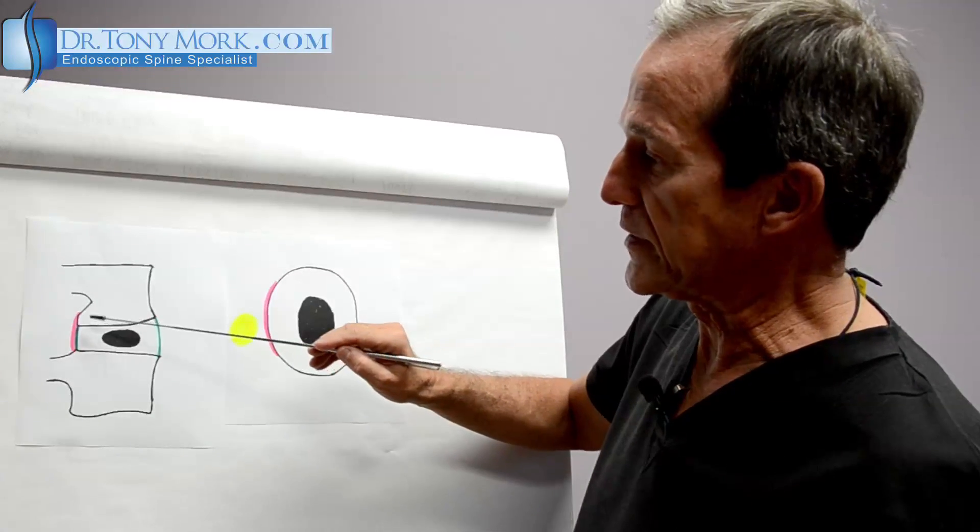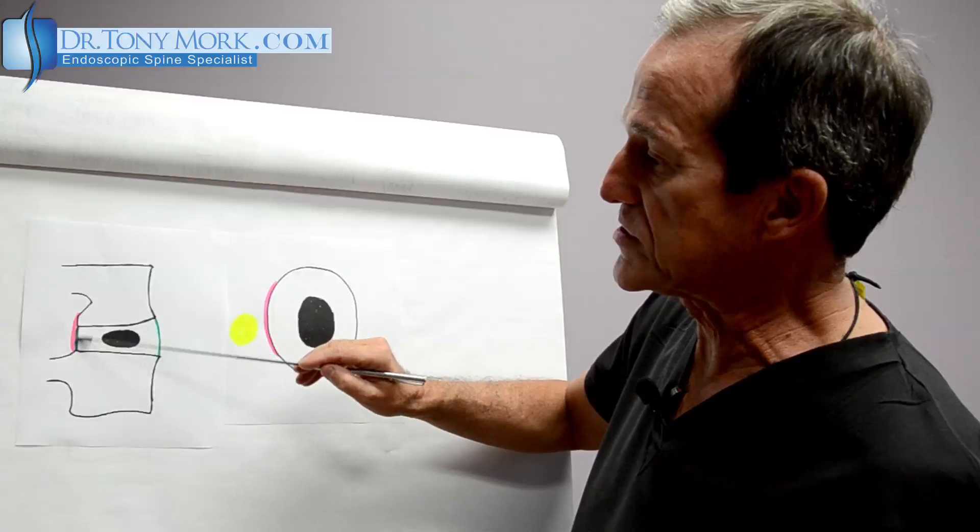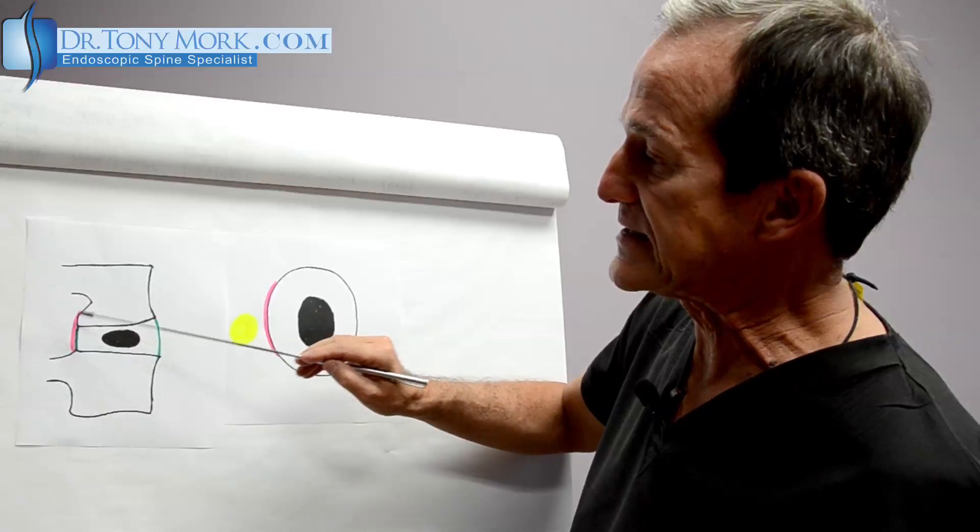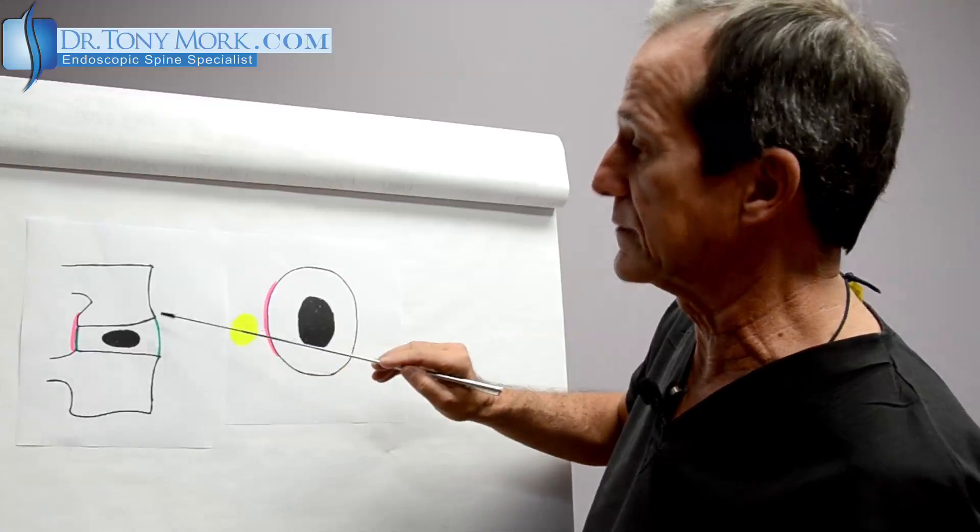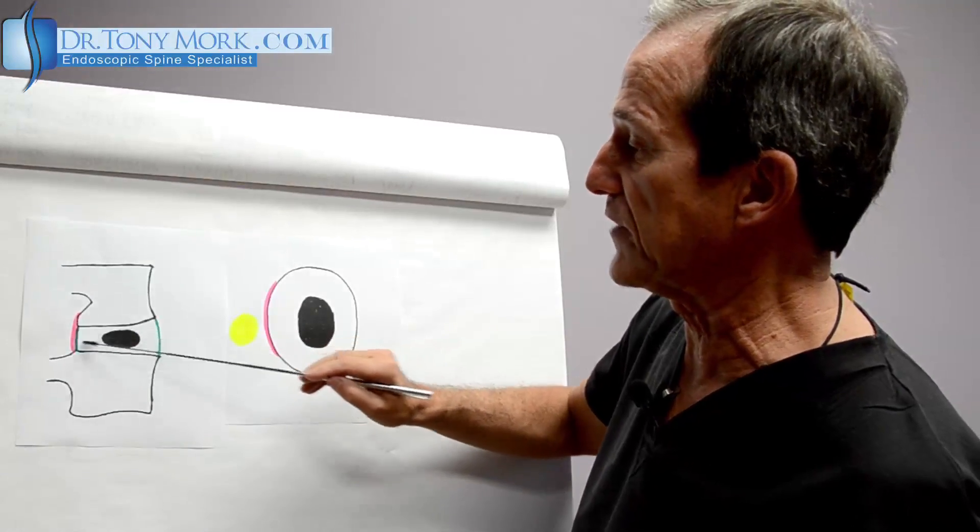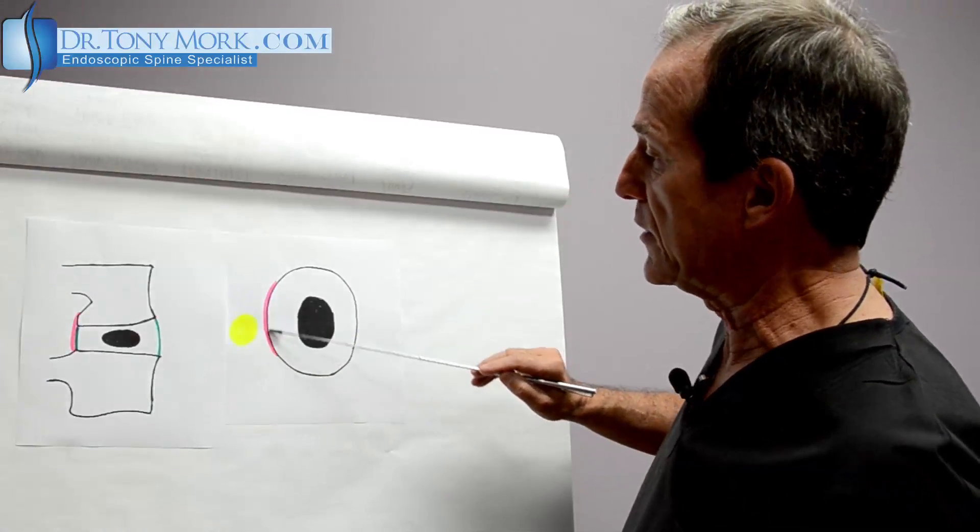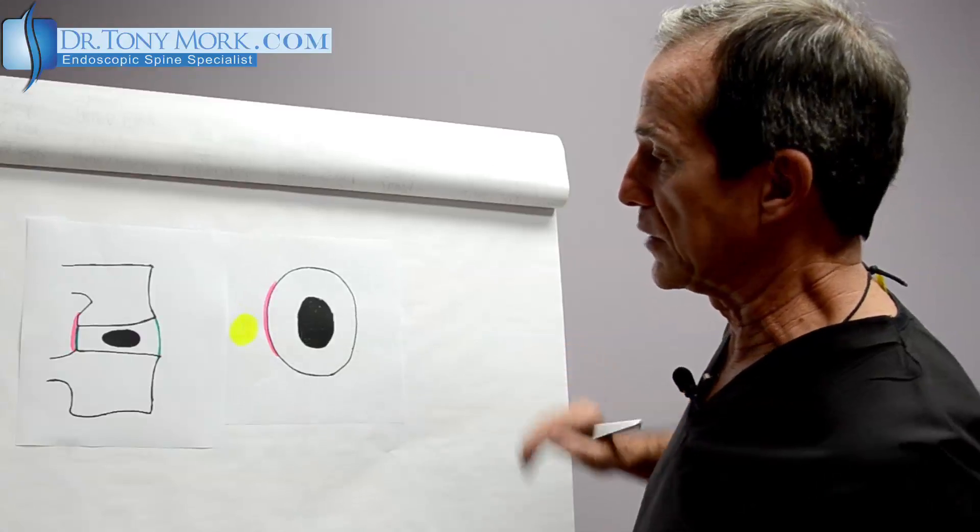So in a normal disc, the annulus does not extend beyond the vertebral body, the bony edges. It's just perfectly flat, normal. There's the spinal cord. You can see that it looks good. Nucleus is in the center.